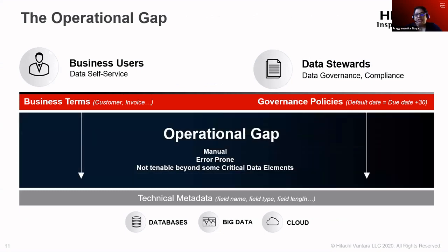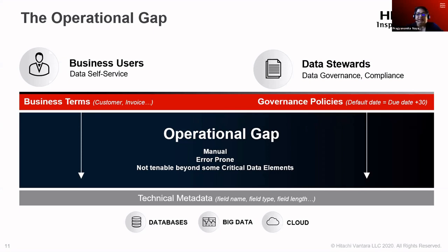There is an operational gap between the language used by technical teams versus business users and data stewards. In technical terms, you're talking about database tables, connections, and specific columns. As a business user, I'm more interested in knowing my invoice number — not in struggling with database drivers and query formulation. Data stewards who handle governance also have different needs. This operational gap makes things more manual, error-prone, and not tenable beyond certain critical data elements.